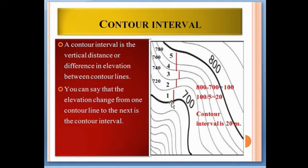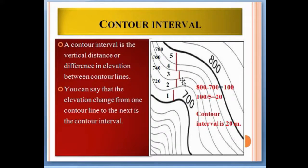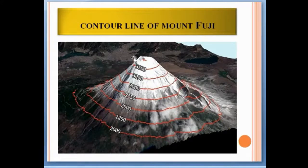So every contour is at an interval of 20. If this is the line of 700, then the next lines will be 720, 740, 760, 780, and 800. This is the formula for calculating the contour interval for intermediate lines. Here is the contour map of Mount Fuji, which is in Japan.